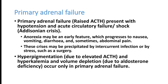Hyperpigmentation, volume depletion, aldosterone deficiency, and potassium elevation are all features seen only in primary adrenal failure — not in secondary. Most patients with primary adrenal failure can present with circulatory collapse, hyperkalemia, volume depletion, and hyperpigmentation. Note that hyperpigmentation may not be seen in acute adrenal failure.